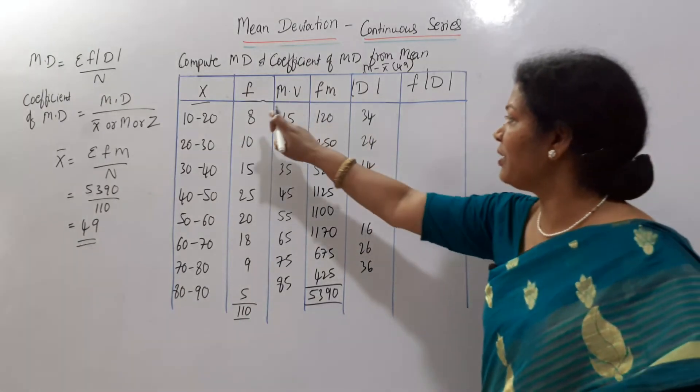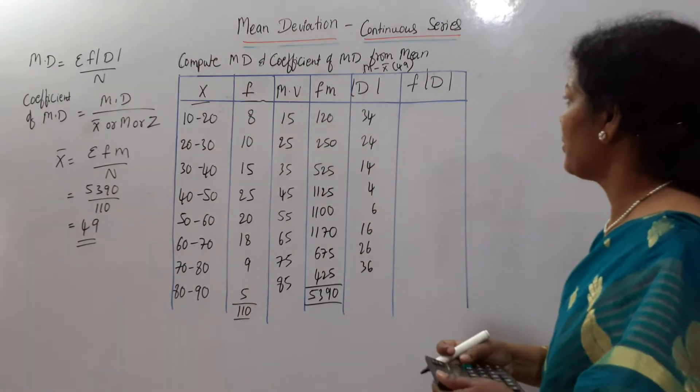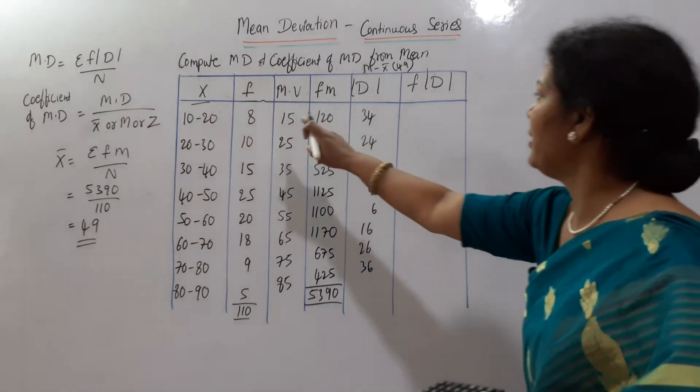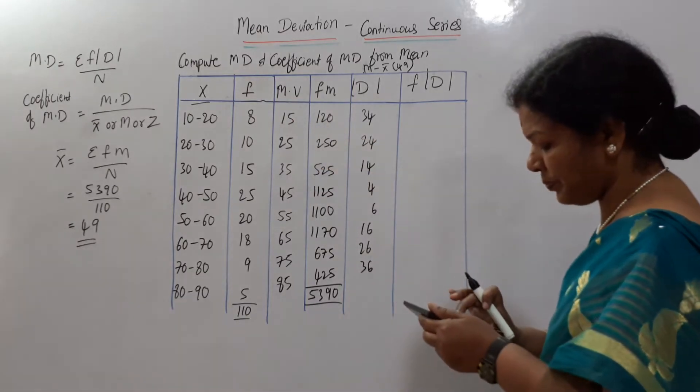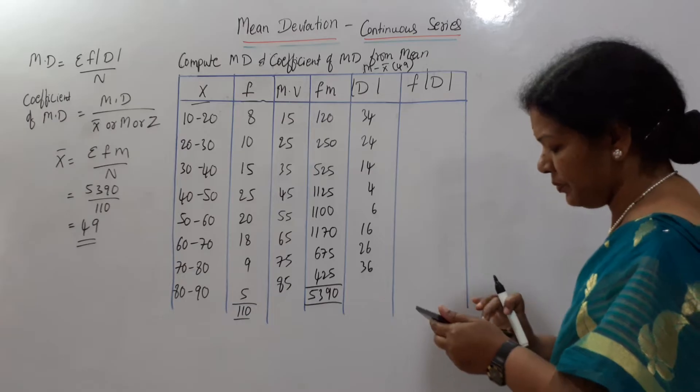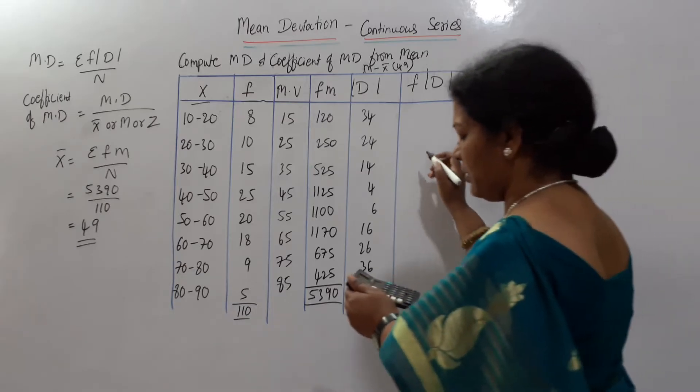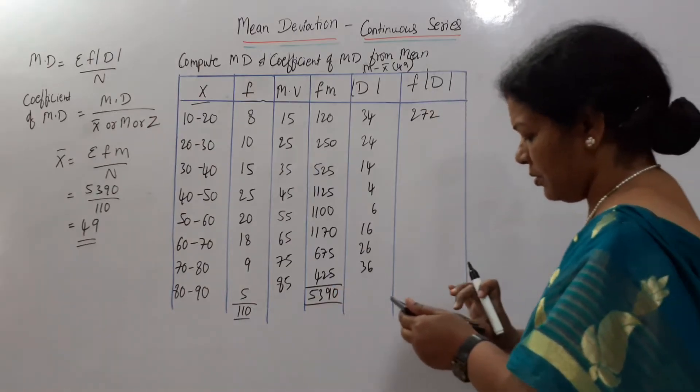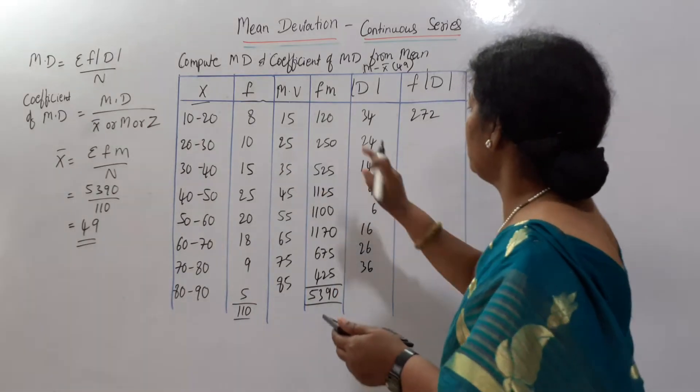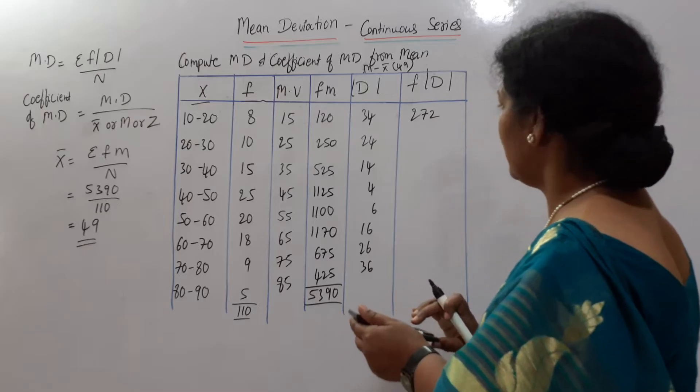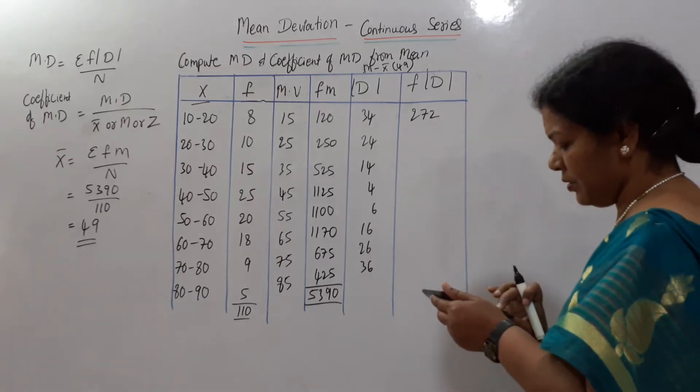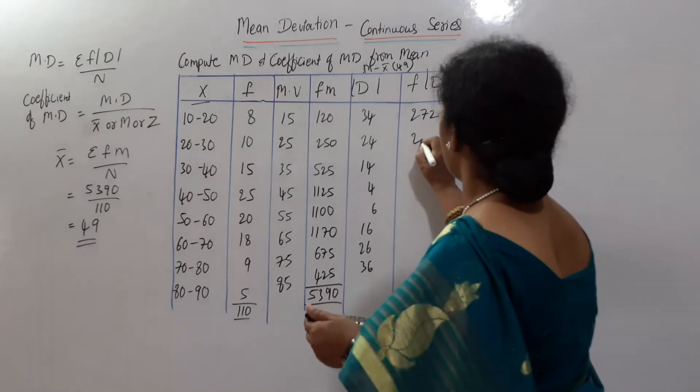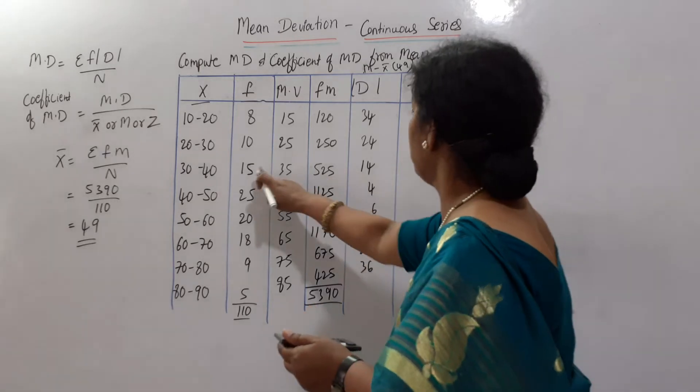Mod D we got. Then finally, f into mod D. Frequency into mod D. We will use the calculator. Frequency into mod D. 18 into 34, 272. Next 10 into 24, 240.